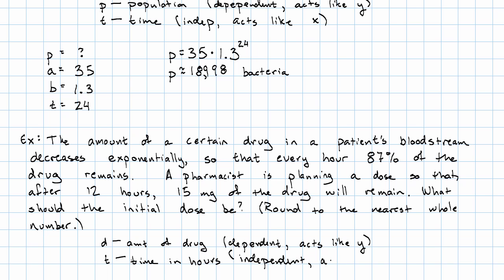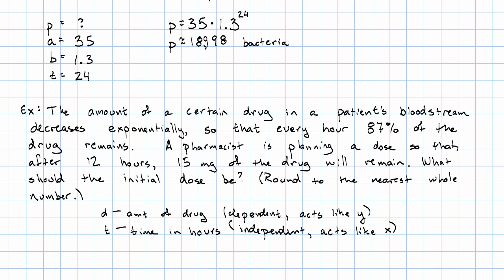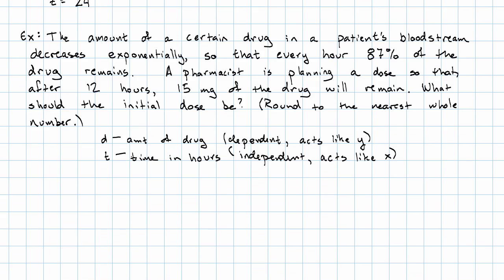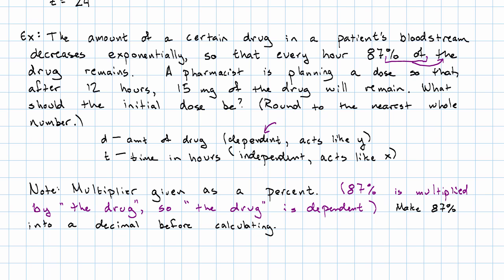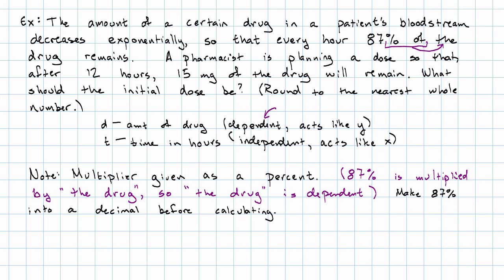That acts like X. Also notice something a little bit odd about the way that the multiplier is given. As always, here our multiplier is given as a percent. That was part of our clue that the drug was going to be our dependent variable because it says percent of the drug. It's the dependent variable that's multiplied repeatedly.